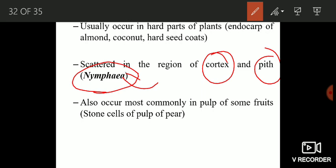And these cells also occur most commonly in the pulp of some fruits. Example is the stone cells of pulp of pear.